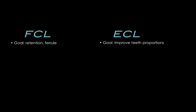In aesthetic crown lengthening, we are improving the teeth proportions. We are displacing the gingival level more apically and getting a better width-to-length ratio, width-to-height ratio. At the same time, we are reducing the gingival display.